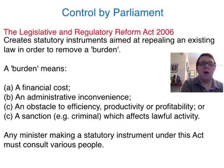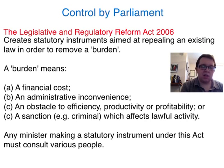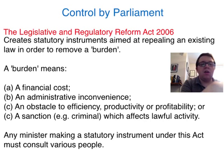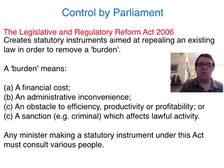The final control by parliament is the Legislative and Regulatory Reform Act 2006. This creates statutory instruments that can repeal or abolish an existing law that has a burden or specific burden. There are certain grounds for this: a burden could mean a financial cost, so it would make sense to get rid of that law to free up more money for the Treasury, for example, for the economy.